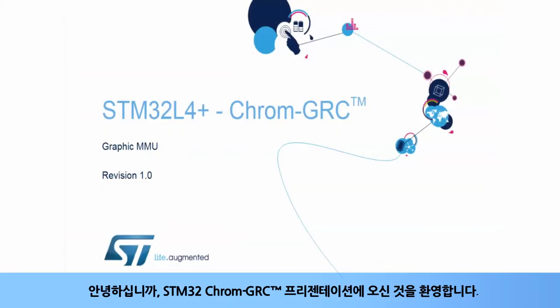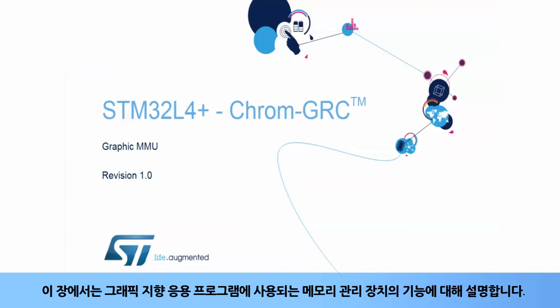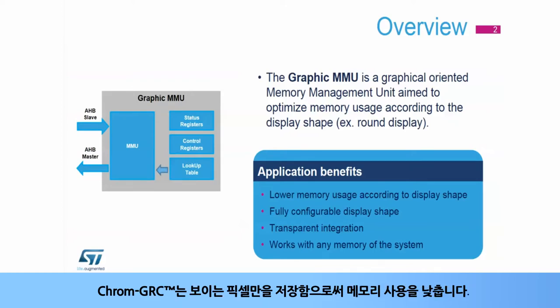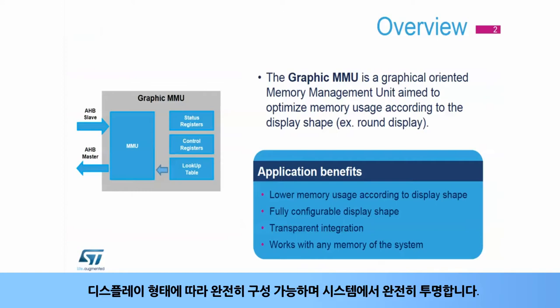Hello, and welcome to this presentation of the STM32 Chrome GRC. This chapter presents the features of the memory management unit used in graphical-oriented applications. The Chrome GRC is a graphic-oriented memory management unit to optimize the memory usage according to the display shape. It lowers the memory usage by storing only the visible pixels in the memory, is fully configurable according to the display shape, and is totally transparent in the system.